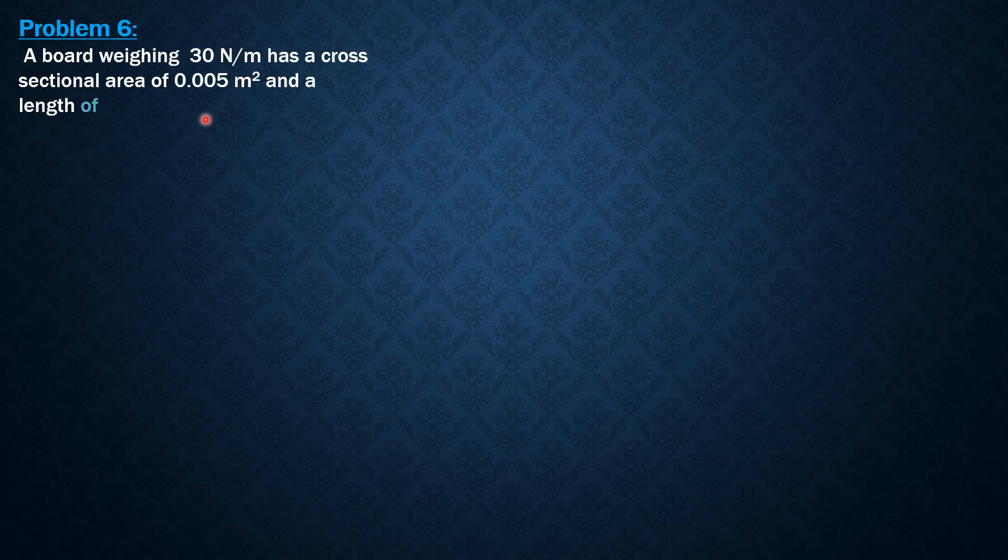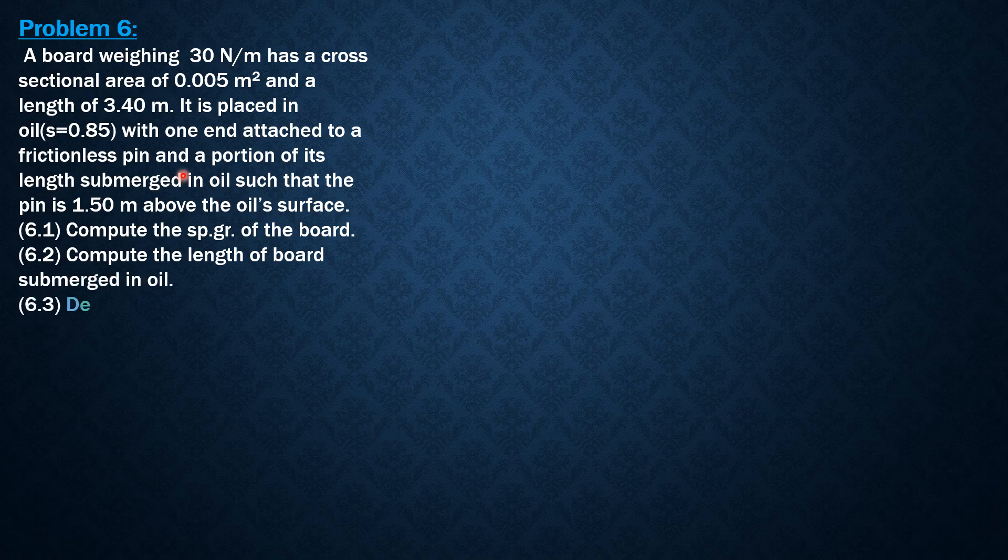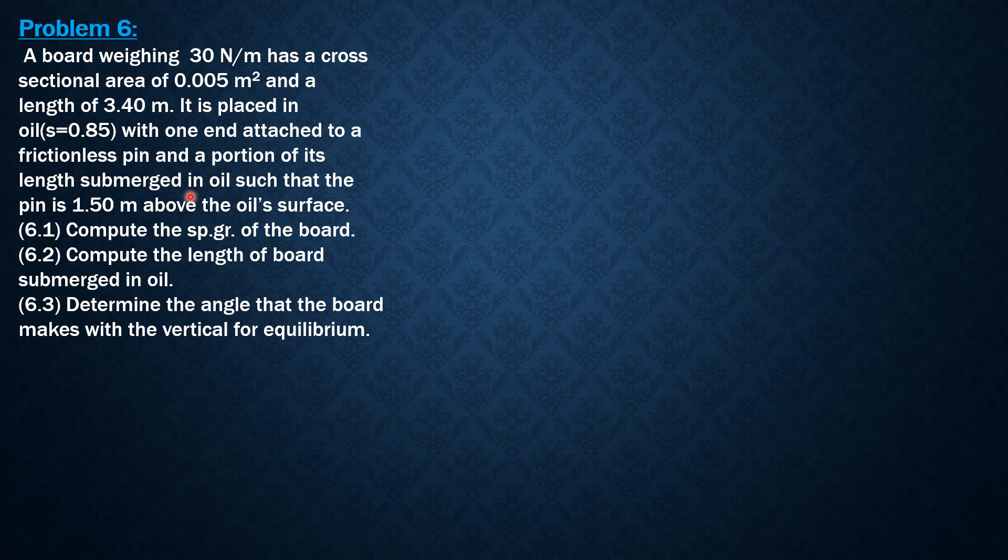A board weighing 30 N per meter has a cross-sectional area of 0.005 square meter and a length of 3.4 meters. It is placed in oil of specific gravity 0.85 with one end attached to a frictionless pin and a portion of its length submerged in oil such that the pin is 1.5 meters above the oil's surface. Compute the specific gravity of the board, compute the length of board submerged in oil, and determine the angle that the board makes with the vertical for equilibrium.